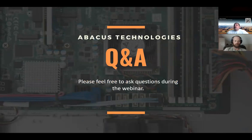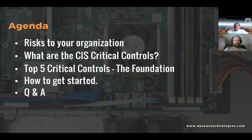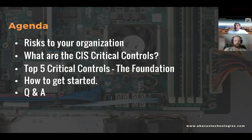As always, if you have any questions, please feel free to enter those into the Q&A area in the Zoom meeting. We'll try to get those answered either during the presentation or at the end. Looking at today's agenda, we're going to talk about risk to your organization, some of the hot items out there, some of the trends we're seeing with cybersecurity and the risk associated with being online. We'll talk about what the CIS Critical Controls are, cover the top five critical controls — which is really the foundation for building your own cybersecurity program — and then Q&A at the end.